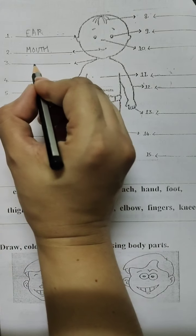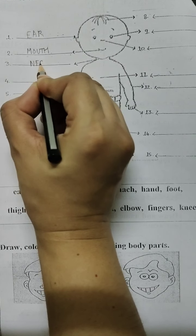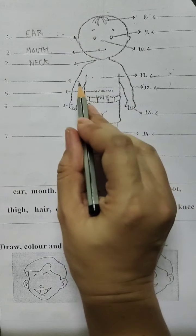Then the next body part that is given is our neck. How does the neck help us? It helps us to rotate our head and look here and there.